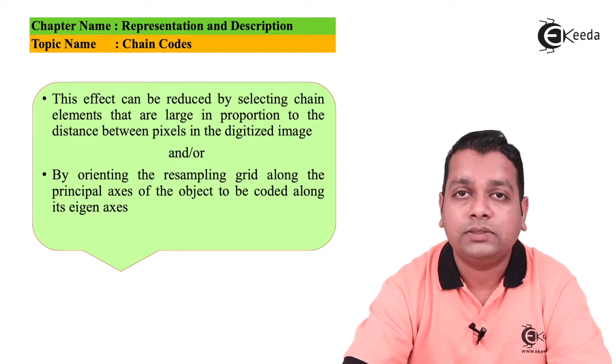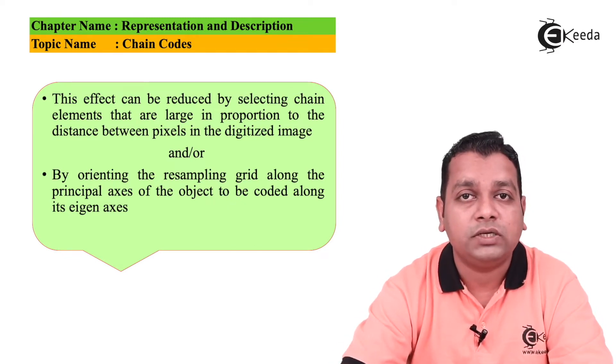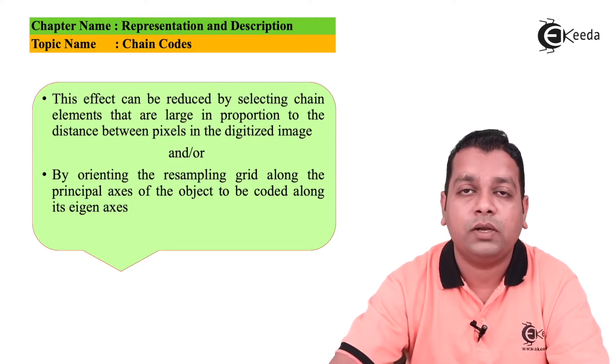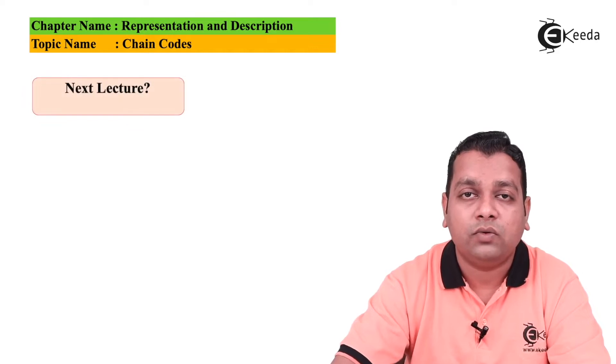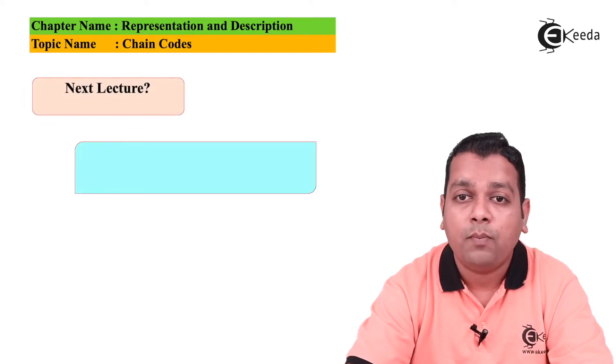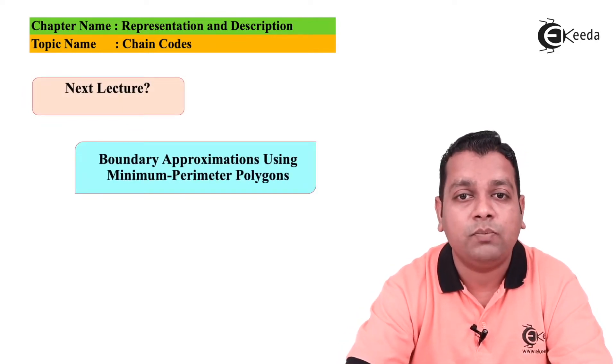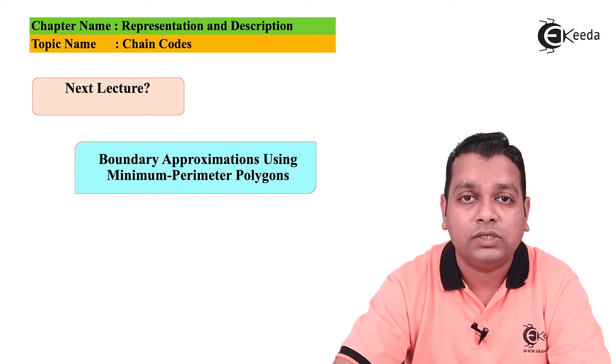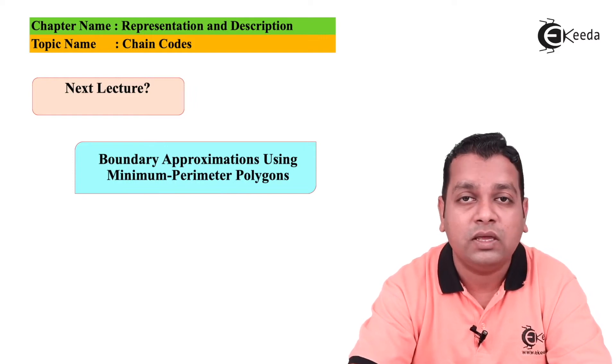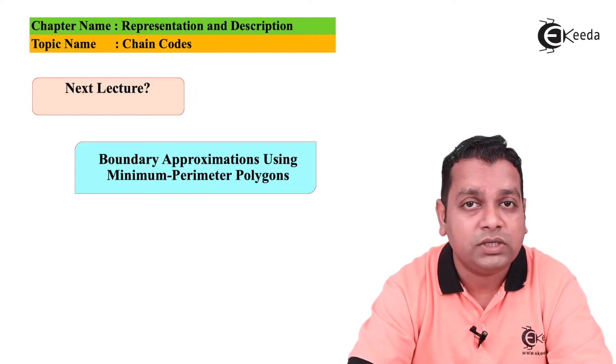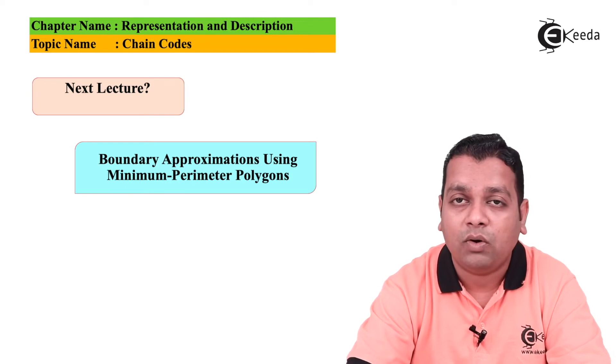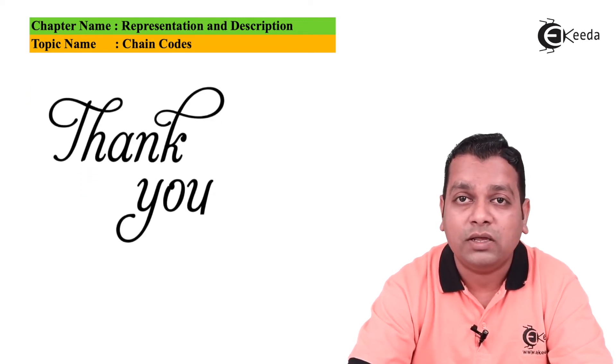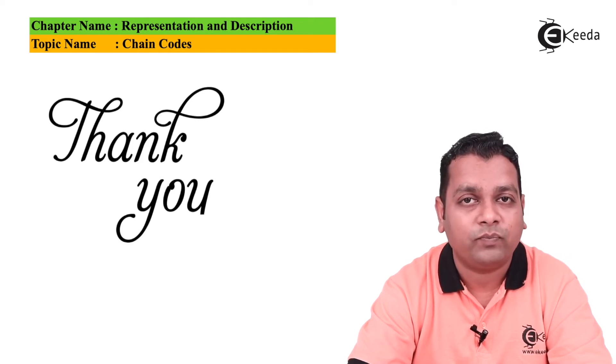So I hope the understanding of this simple representation technique with the help of chain codes is definitely clear to you. By the next lecture we shall be addressing the topic boundary approximations using the minimum perimeter polygons. I am sure you are definitely getting the knowledge for the subject digital image processing. If you want to have more information regarding any of the concepts or practical sessions or practice of miscellaneous problems, you can definitely subscribe to our Ekeda channel. Thank you.